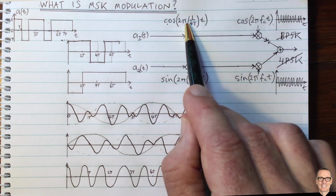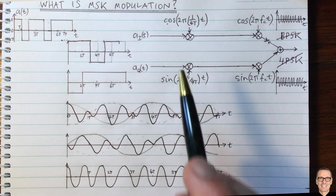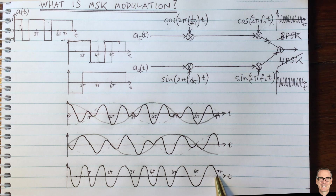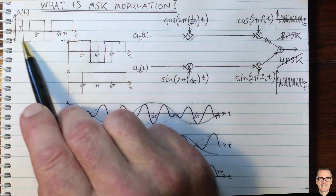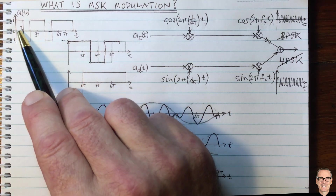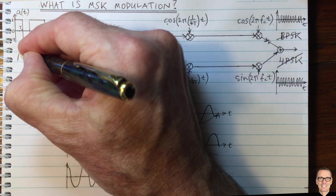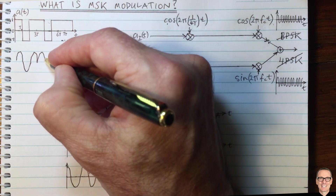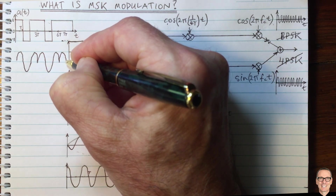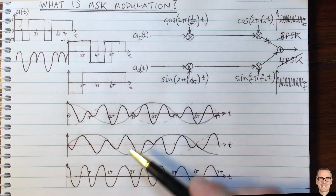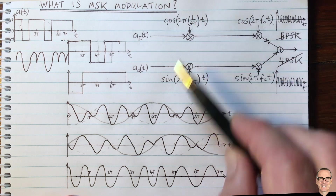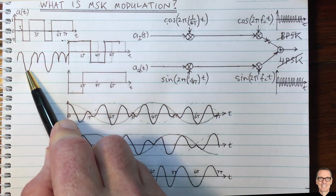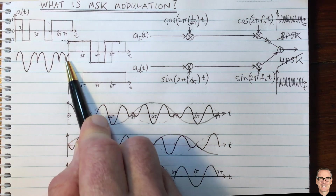Partly this is because of the sinusoidal pulse shaping, which smooths things out. But it's also due to the special construction with the time offset — it means there is never a discontinuity in phase. With a plain pulse shaping filter, you'd get smooth shapes within each symbol but discontinuities at the boundaries. The combination of 1/(4T) frequency and the data offset removes all discontinuities.